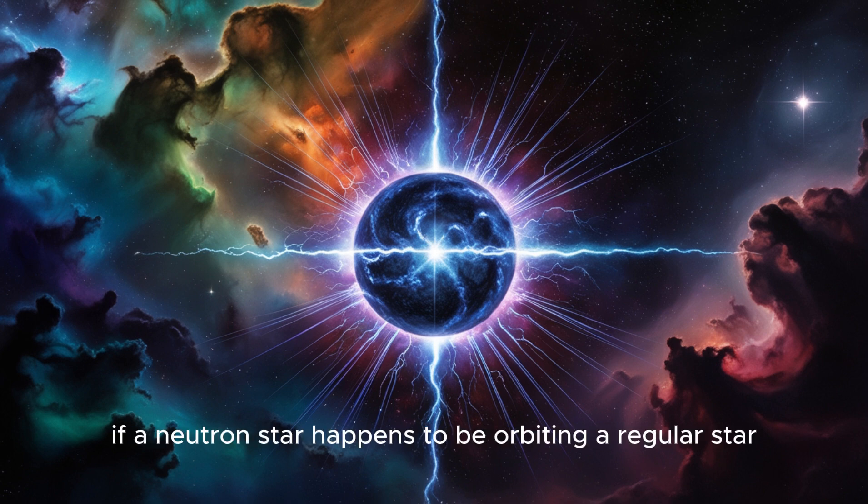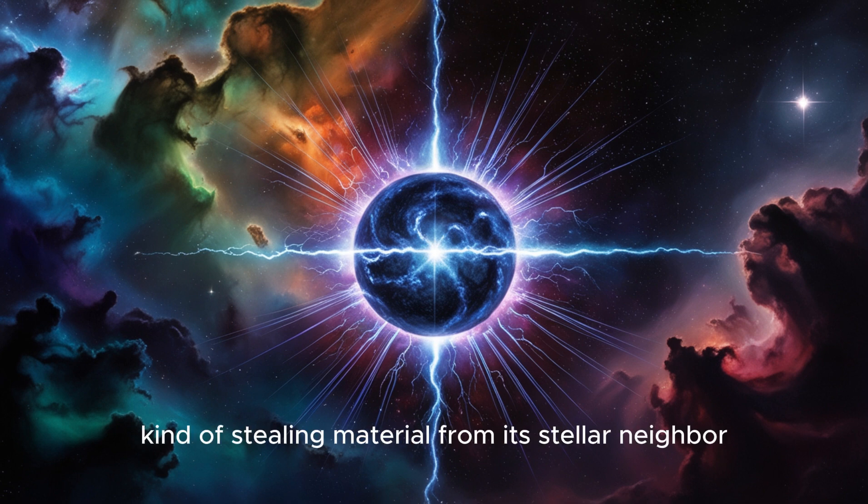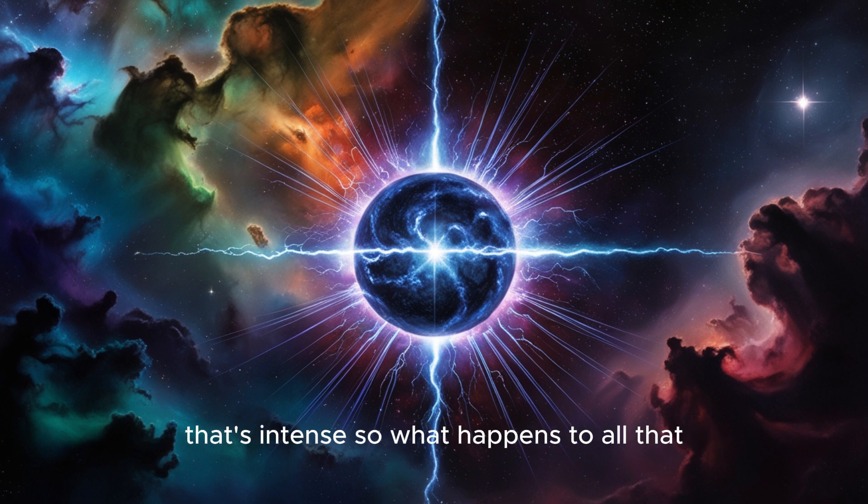Is there anything else they can do? Oh, there's much more. Remember that strong gravity we talked about? Well, if a neutron star happens to be orbiting a regular star, that gravity can start pulling material off its companion. Whoa, so it's like a cosmic vampire, kind of stealing material from its stellar neighbor. That's intense.